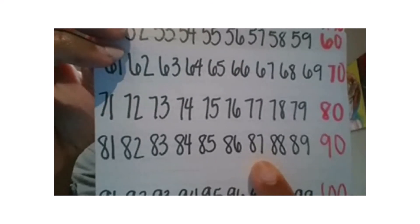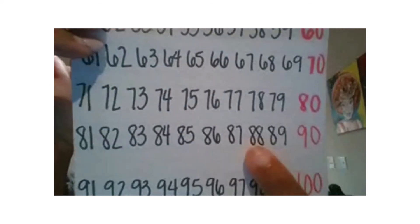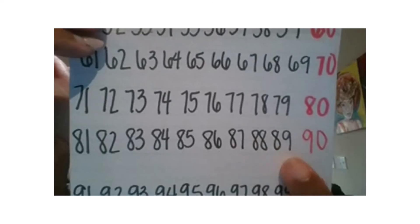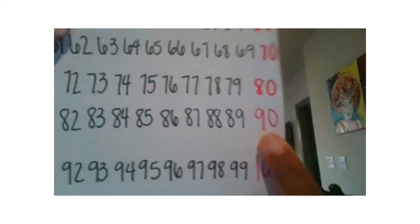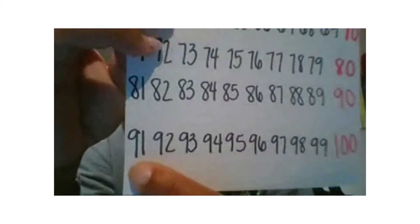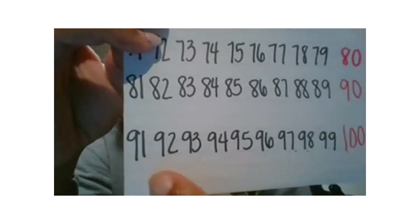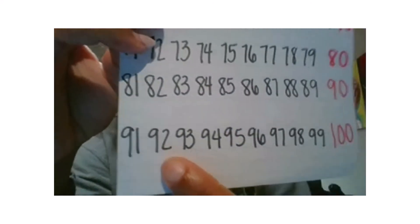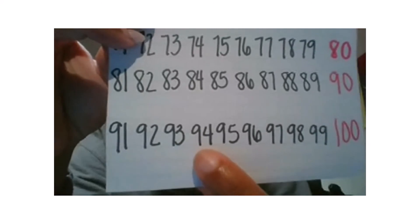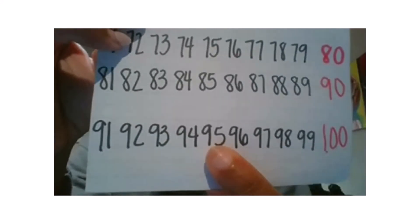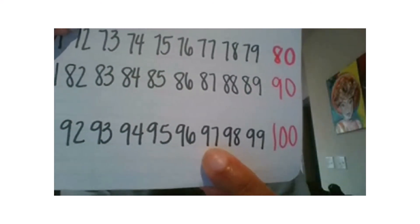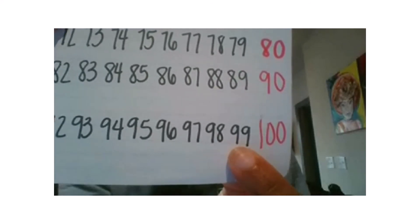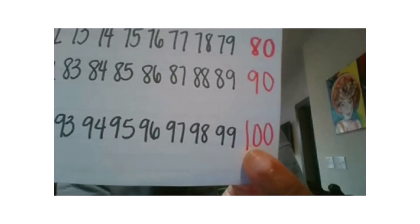Eighty-seven is what? Eight tens seven. Eighty-eight is what? Eight tens eight. Eighty-nine is what? Eight tens nine. Ninety is what? Nine tens. Great job. 91 is what? Nine tens one, nine tens two, nine tens three, nine tens four. 95 is what? Nine tens five, nine tens six, nine tens seven, nine tens eight, nine tens nine, ten tens, right? So ten tens is 100.